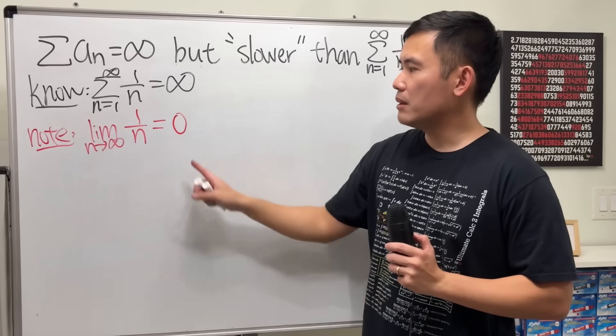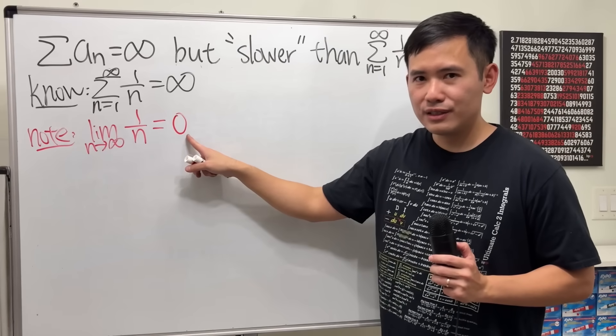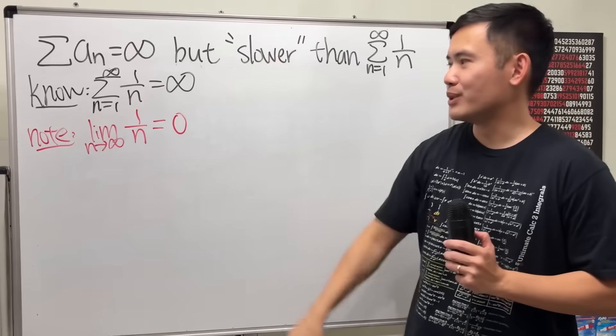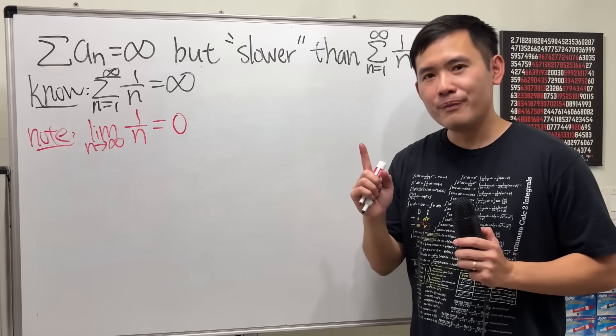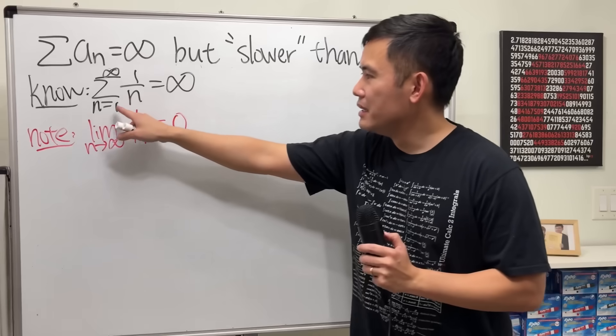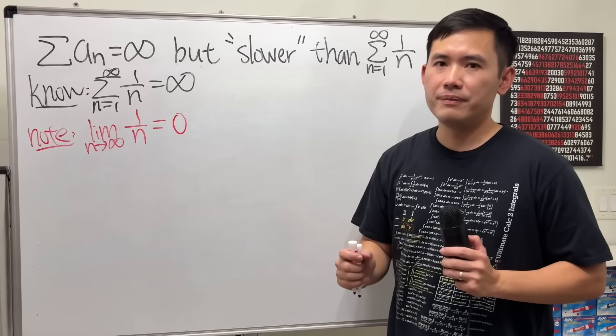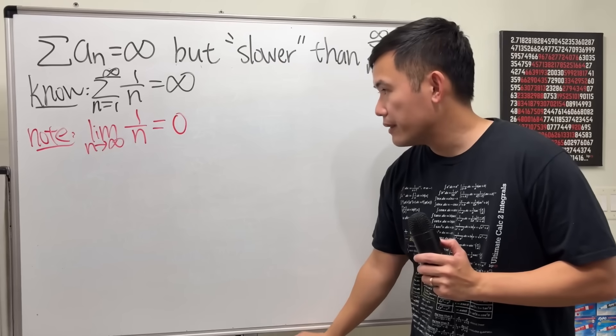But eventually, we're adding infinitely many terms. But the surprising result is that that still goes to infinity. Now, what do we mean by this harmonic series goes to infinity very slowly? Let me give you an example. Here's a fact.